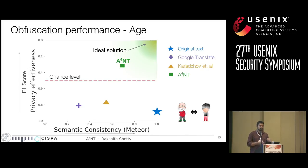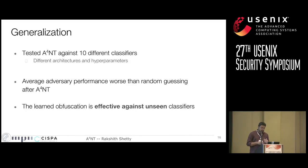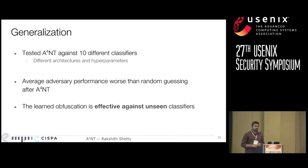We observed similar results on gender and identity obfuscation tasks, presented in the paper. Another aspect we tested is generalization. So far we evaluated ANT against one particular adversary architecture. The question is: does it learn only to fool this particular adversary, or does it generalize? We created an experiment with ten different adversary architectures using different architectures and hyperparameters, and on average all of these adversaries perform worse than random guessing on the ANT obfuscation, indicating empirically that the obfuscation generalizes to unseen classifiers.